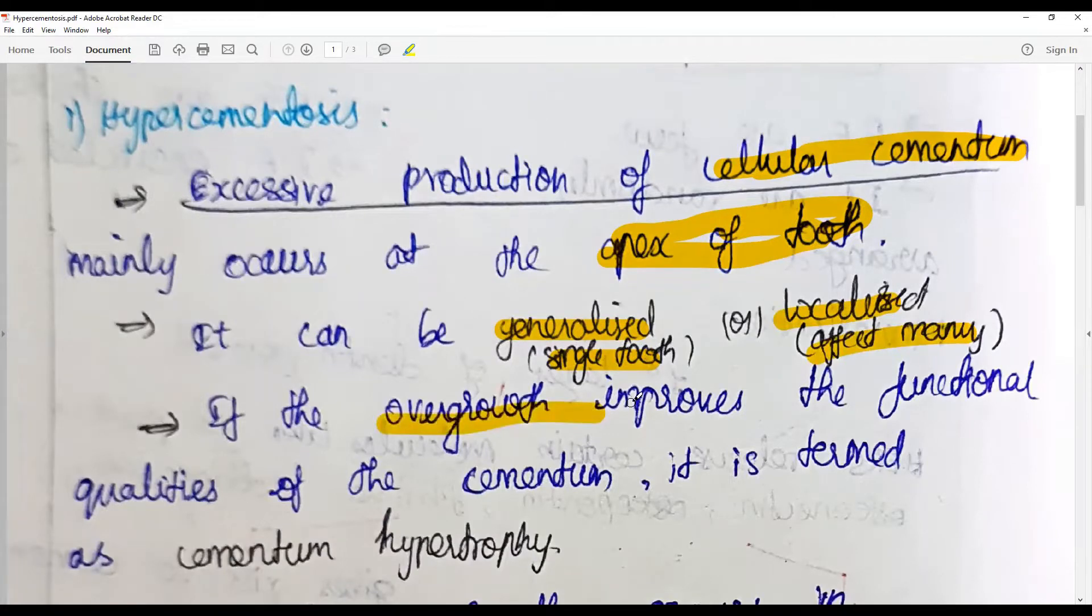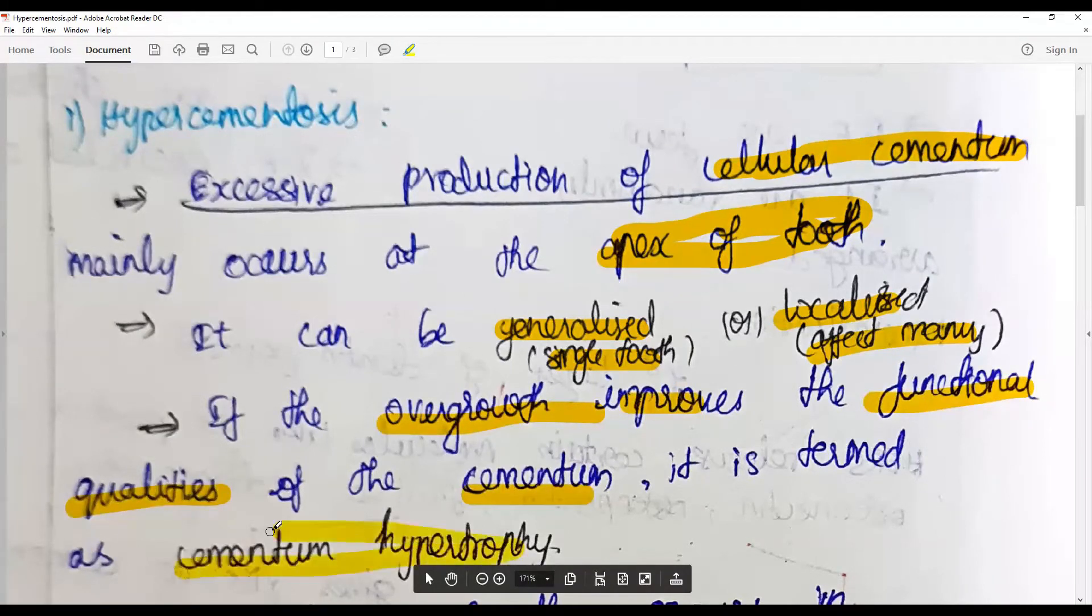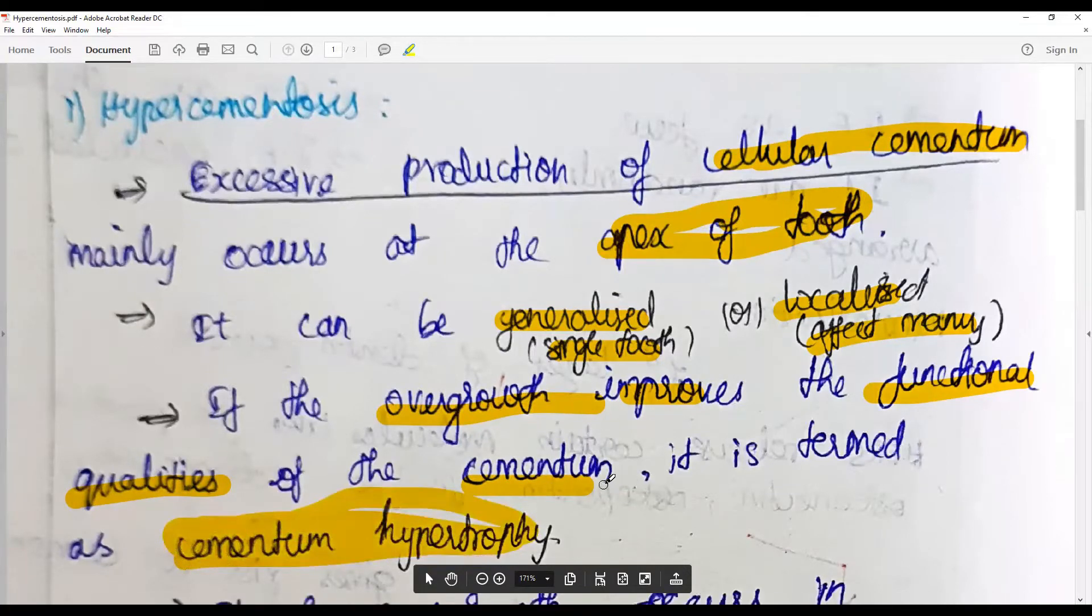If the overgrowth of the cementum improves the functional qualities of the cementum, it is termed as cementum hypertrophy. The function of cementum is to compensate for the loss of the vertical dimension with attrition or with the loss of tooth structure.